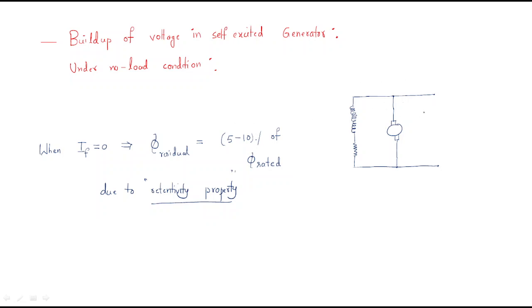This is the self-excited generator. There is a rheostat that will be varying — this rheostat decides how much current will flow in the field branch. The first most important thing is: when the field current is zero, there is no field current because initially there is no generated EMF. That's why there is no field current, but this winding has residual flux. Residual flux means with field current zero, it still consists of some flux.